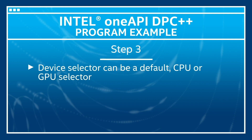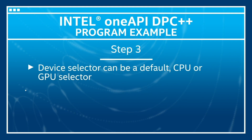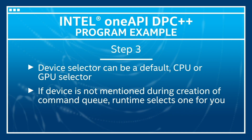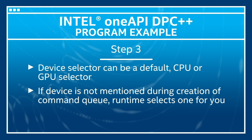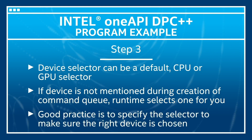Step 3 is to create a command queue for specific devices using a device selector. The device selector can be a default selector or a CPU or GPU selector. If the device is not explicitly mentioned during the creation of the command queue, the runtime selects one for you. However, it's good practice to specify the selector to make sure the right device is chosen.